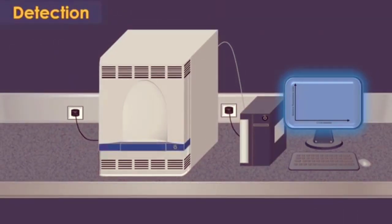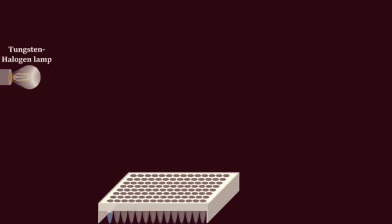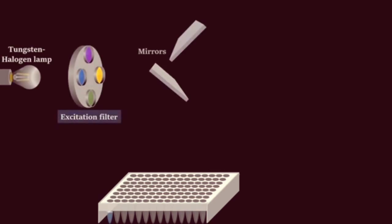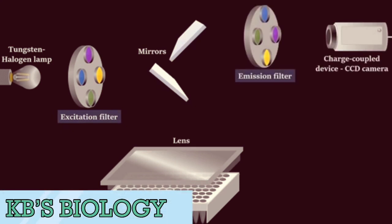For the measurement of the fluorescent signal, a tungsten halogen lamp, an excitation filter, mirrors, lens, an emission filter, and a charge-coupled device CCD camera are used.